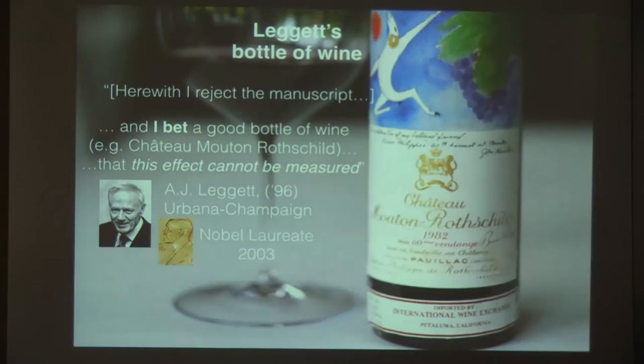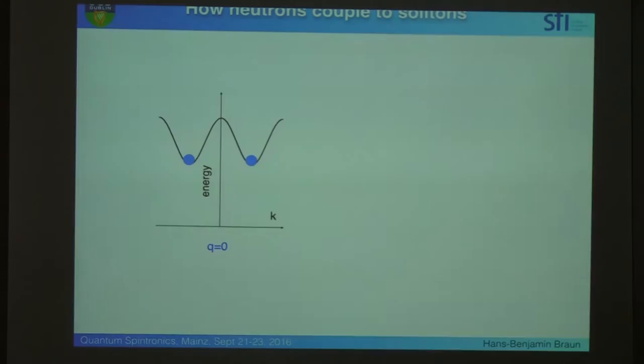And we wrote the statements, and I bet a good bottle of wine, for example, Château-Mouton-Rothschild, incidentally, this is the better wine than we had yesterday, that this cannot be measured. And so the heat was on.